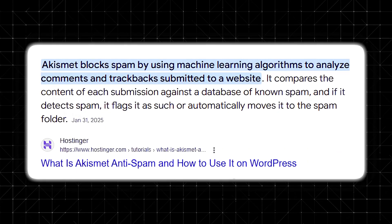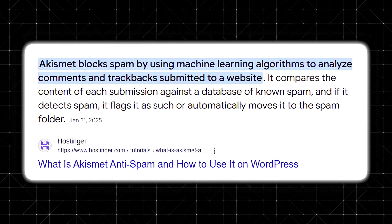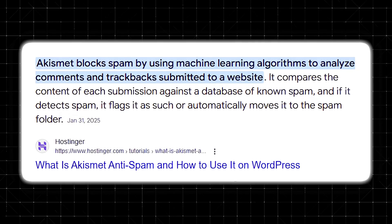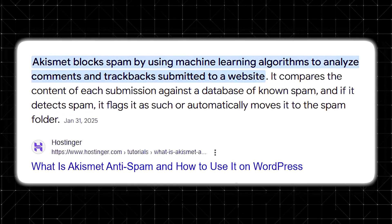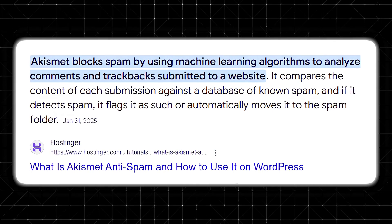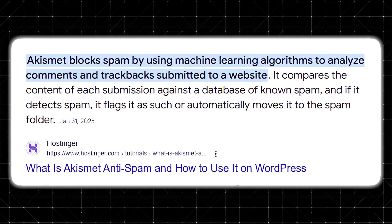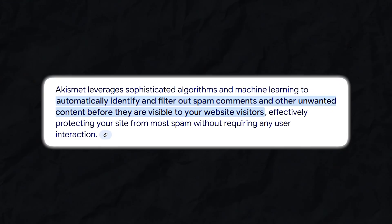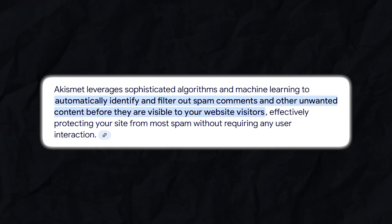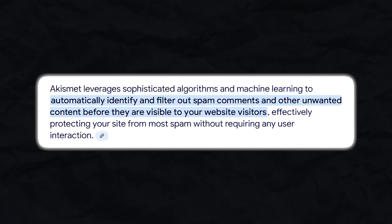When a comment is posted on your site, Akismet uses advanced algorithms and machine learning techniques to analyze the content and compare it against millions of spam signatures from sites around the world, determining whether the comment is likely to be spam. This process happens in real time, meaning that by the time your visitor sees your post, most of the unwanted content has already been filtered out.